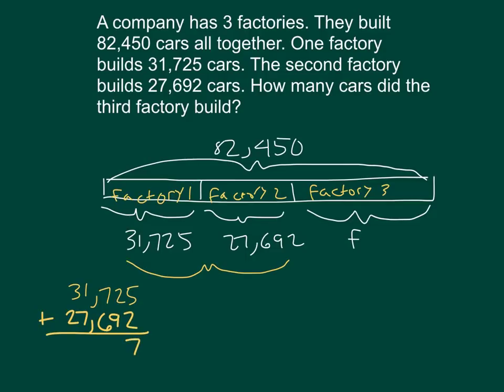Five plus two is seven, two plus nine is eleven, we'll place a one and regroup a one. Seven plus six is thirteen, and one more is fourteen, four, regroup the one. One, one, and seven is nine, and in the ten thousands place, I have three plus two, which is five. So, I know this amount here is 59,417, that's the number of cars that factory one and factory two have made.